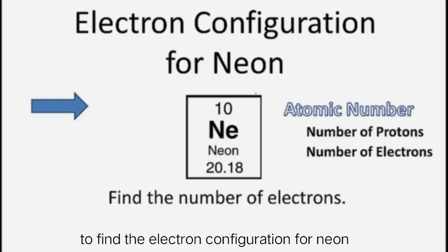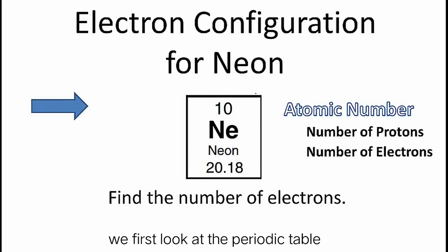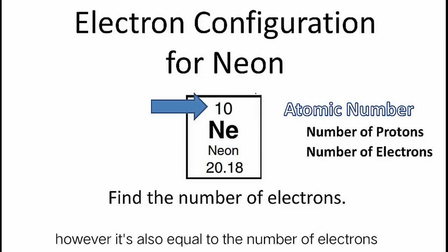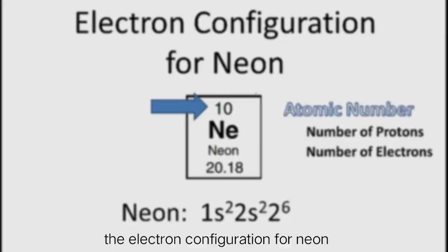To find the electron configuration for neon, we first look at the periodic table to determine the atomic number. That's the number above the element symbol. The atomic number is equal to the number of protons for the atom. However, it's also equal to the number of electrons. And once we have the number of electrons, we can use that to write the electron configuration for neon.